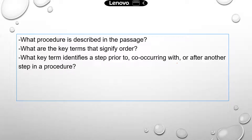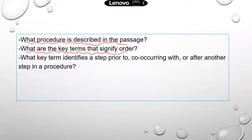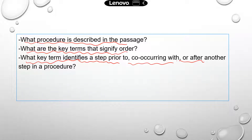Here are the common questions you might see for this type of reading question. For example: what procedure is described in the passage, and can you identify the key terms that signify order? They may give you a different set of words and ask which one actually indicates the order of steps. You also need to know terms that identify a step before, after, or happening at the same time as another step in the procedure.